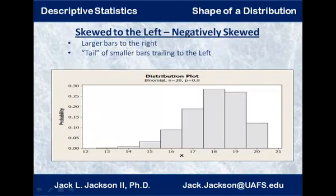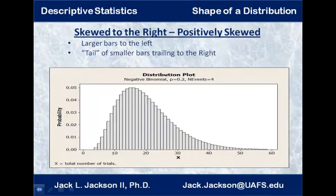On the other hand, if the tail is going out to the left, like this distribution, this is negatively skewed, or skewed to the left. And if it's symmetric, then it has no skewness at all — zero skewness. You can actually put a number to this. If you ever see a skewness computed for a data set, if that number is zero it's perfectly symmetric; close to zero, almost symmetric. A negative skewness means skewed to the left with a long tail to the left, and positive skewness means a long tail to the right.